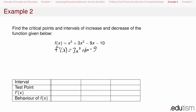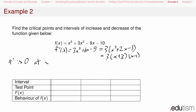Now we want to find when this derivative is 0 and when it's undefined, so we factor it. We can factor out a 3, leaving x² + 2x - 3, which factors further to 3(x + 3)(x - 1). So f'(x) = 0 at x = -3 and x = 1. And f' is never undefined — it's a polynomial, so its domain is all real numbers. These are our two critical numbers.